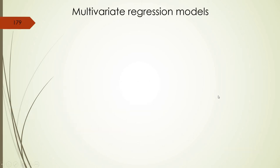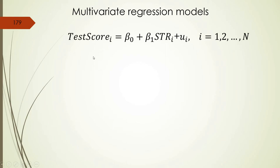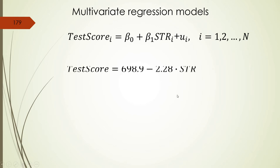This presentation is about multivariate regression models. So far we had only one independent variable — student-teacher ratio — in our test score example. But we can put more than one independent variable in our model. This is x1, but we can also have x2, x3, x4, etc. This presentation explains why we sometimes need to do that.